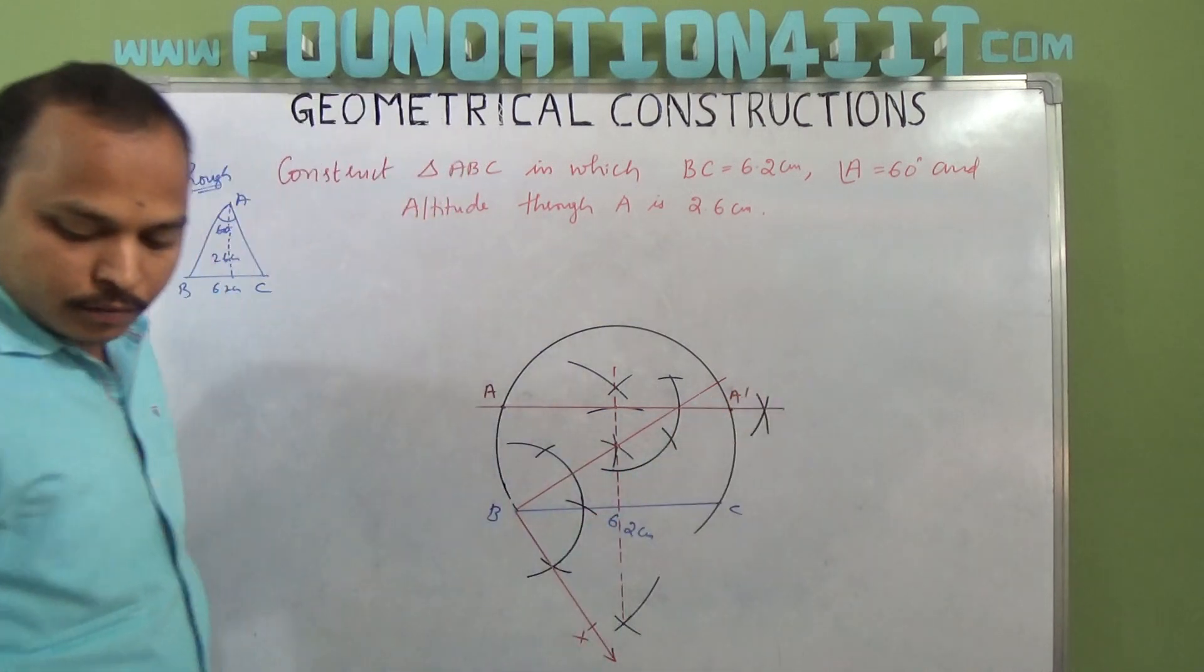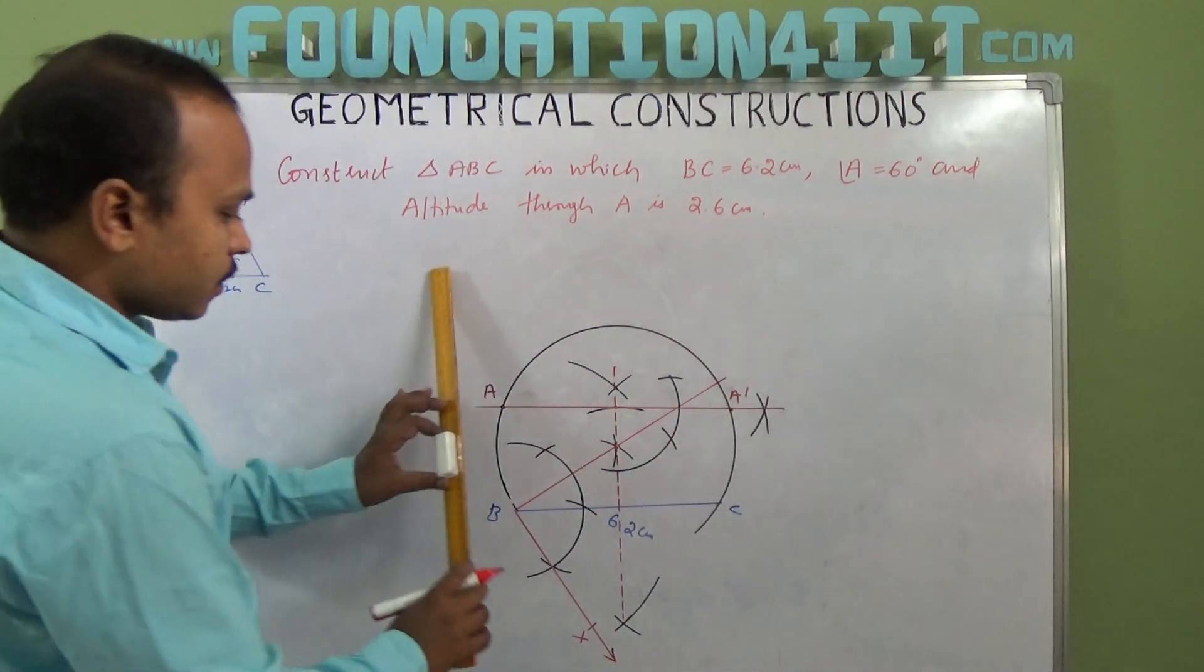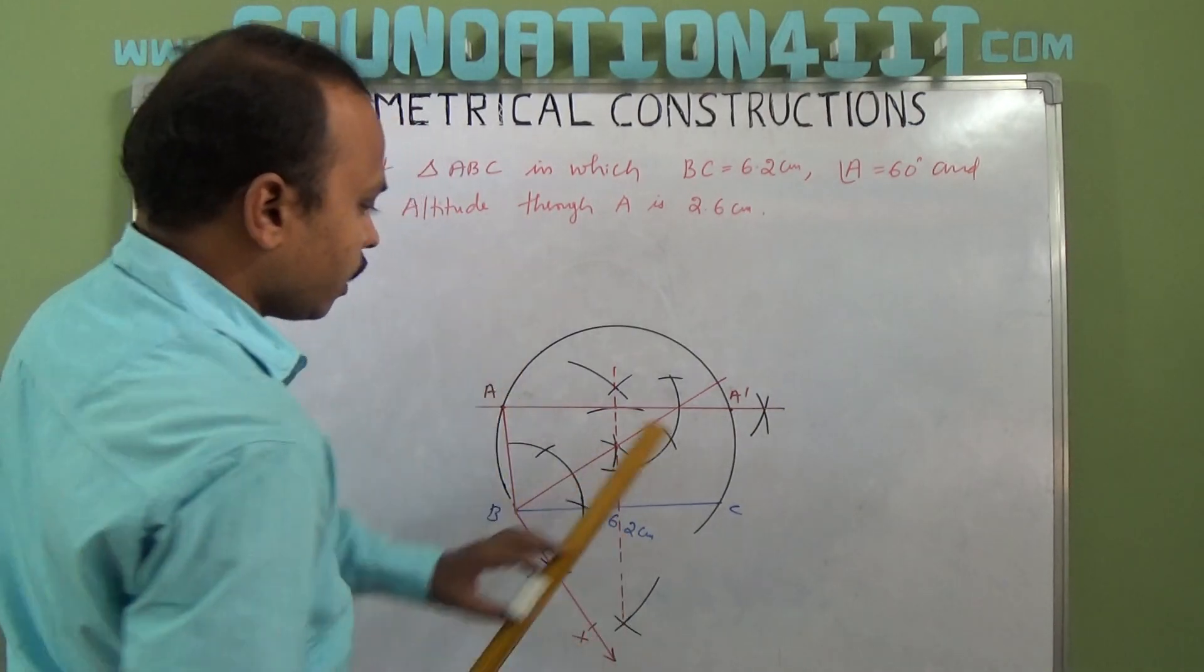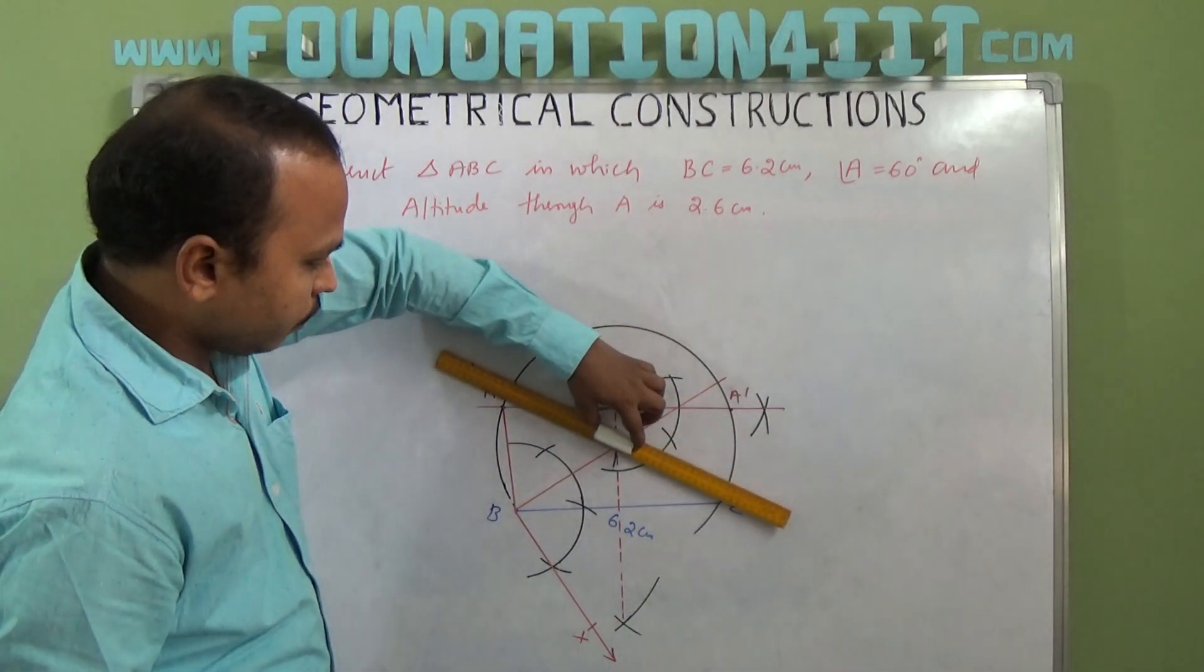Where this parallel line intersects the circle, that point is A, or A-dash if it's on the other side. Now join A to B and A to C.